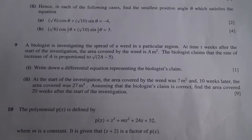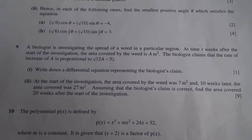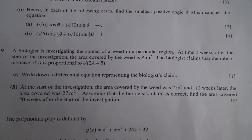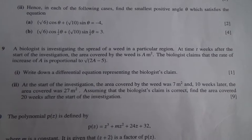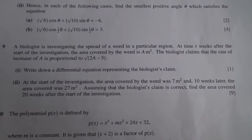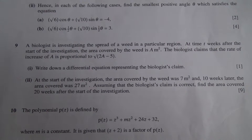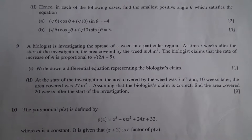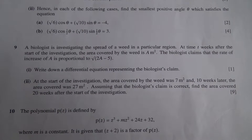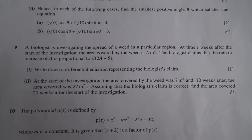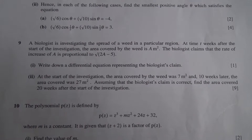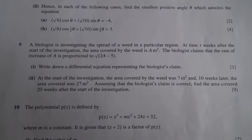Hi, for question number 9, a biologist is investigating the spread of a weed in a particular region. At time t weeks after the start of the investigation, the area covered by the weed is A metres squared. The biologist claims that the rate of increase of A is proportional to the square root of 2A minus 5. First part: write down a differential equation representing the biologist's claim.